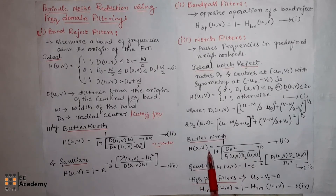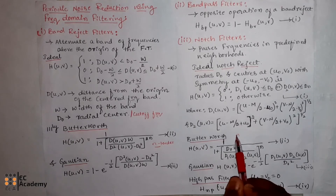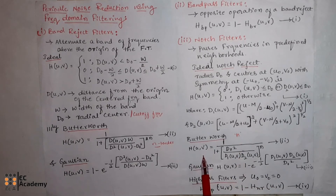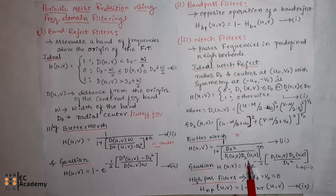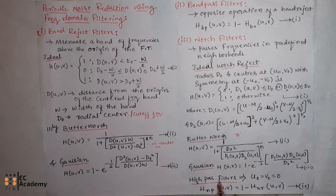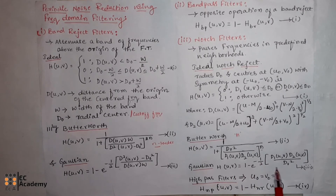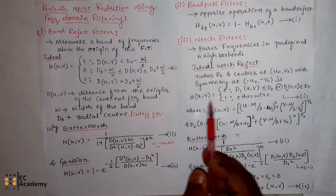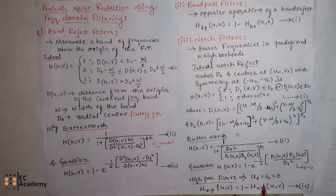Similarly, the Butterworth notch reject filter of order n is given as: h(u,v) = 1 divided by 1 plus [d0² divided by d1(u,v) times d2(u,v)] to the power of n, where n is the order of the filter. The Gaussian notch filter is given as: h(u,v) = 1 minus exponential to the power of minus 1/2 times [d1(u,v) times d2(u,v)] divided by d0². These three filters become high pass filters if u0 and v0 are set to 0.